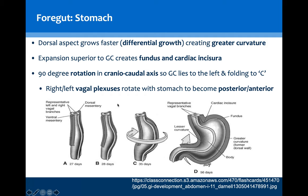The rotation occurs because of ventral mesentery thinning, and a 90-degree rotation around the cranio-caudal axis occurs such that the greater curvature lies to the left. This means that the right-left vagal plexi will rotate to become the posterior and anterior vagal plexuses. This used to be very important anatomy due to the now historic surgical procedure of removal of the vagal plexuses, performed in patients with severe acid reflux or dysphagia to reduce the amount of acid secretion in the stomach.